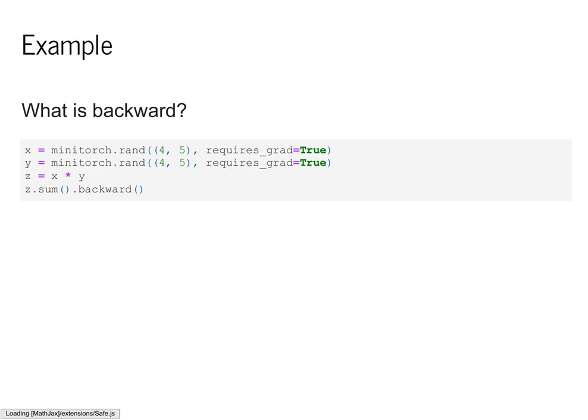Let's start with an example. Here we'll have two different tensors, x and y. We'll multiply them together — this multiplication is like a zip. We'll then take a sum, which will be a reduction down to a scalar value. We'll then call backward on that scalar value, creating many different derivatives packaged up into a gradient. We'll have a gradient associated with both x and y that represents the change in our final value based on small changes to any of the cells in the original x and y tensors.